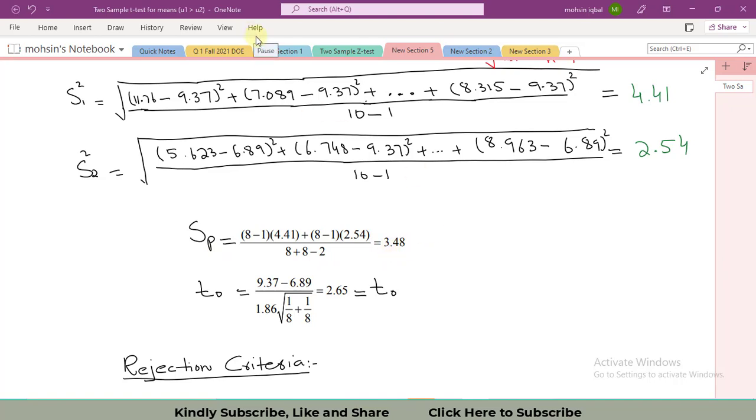Let me tell you one more thing that in order to decide whether you have to opt for two sample t-test for equal variances or for unequal variances, please decide based upon these two variances of the samples. If the largest variance is less than twice the smallest variance, it means that we will take the t-test for equal variances.